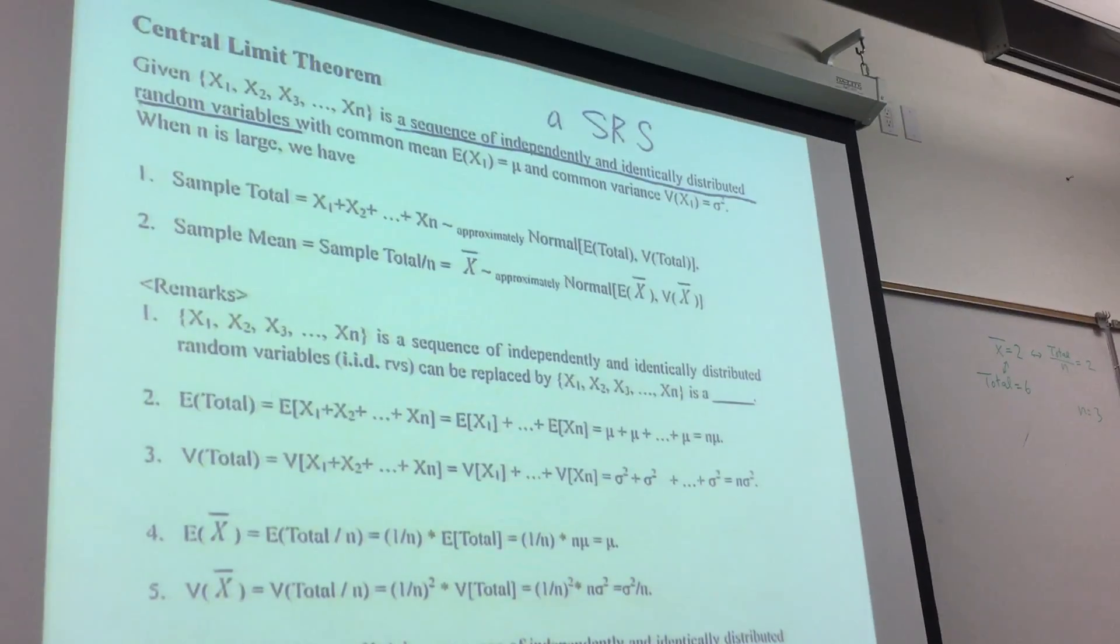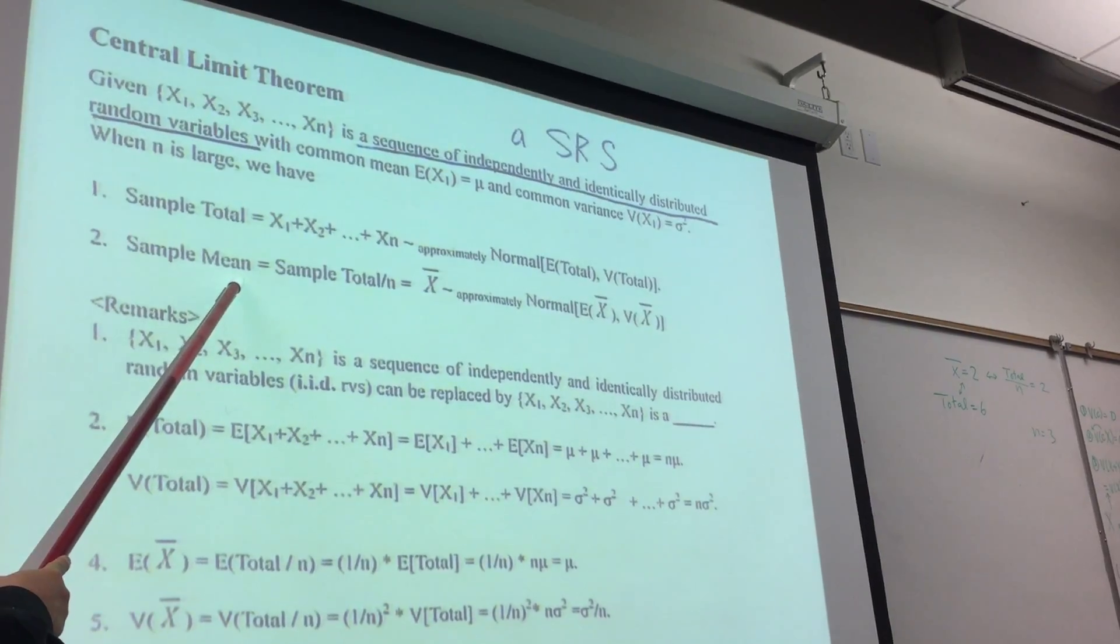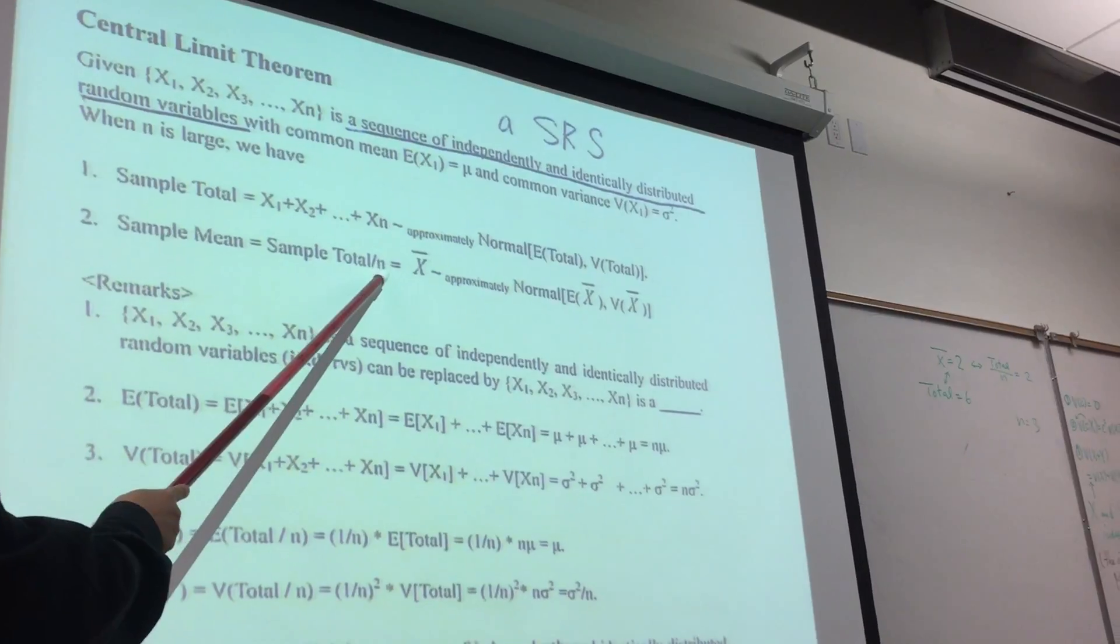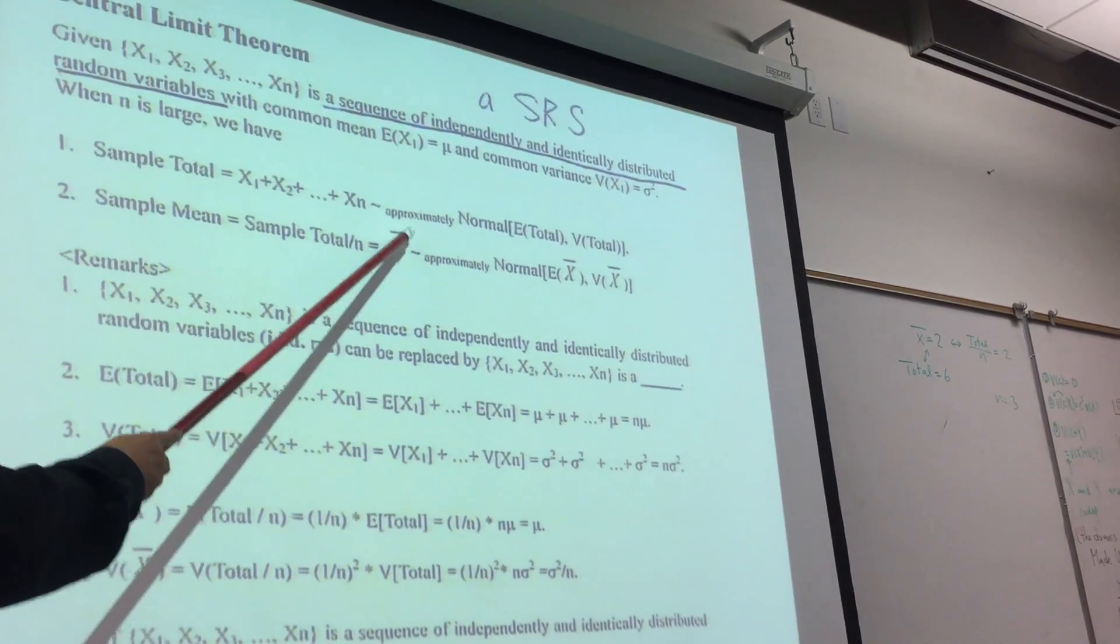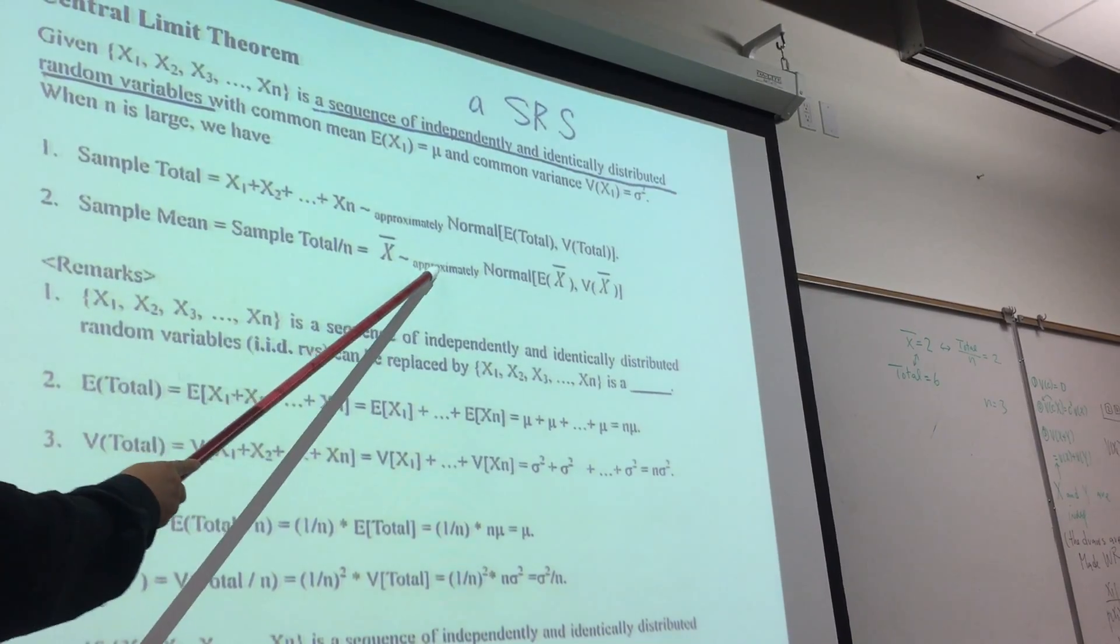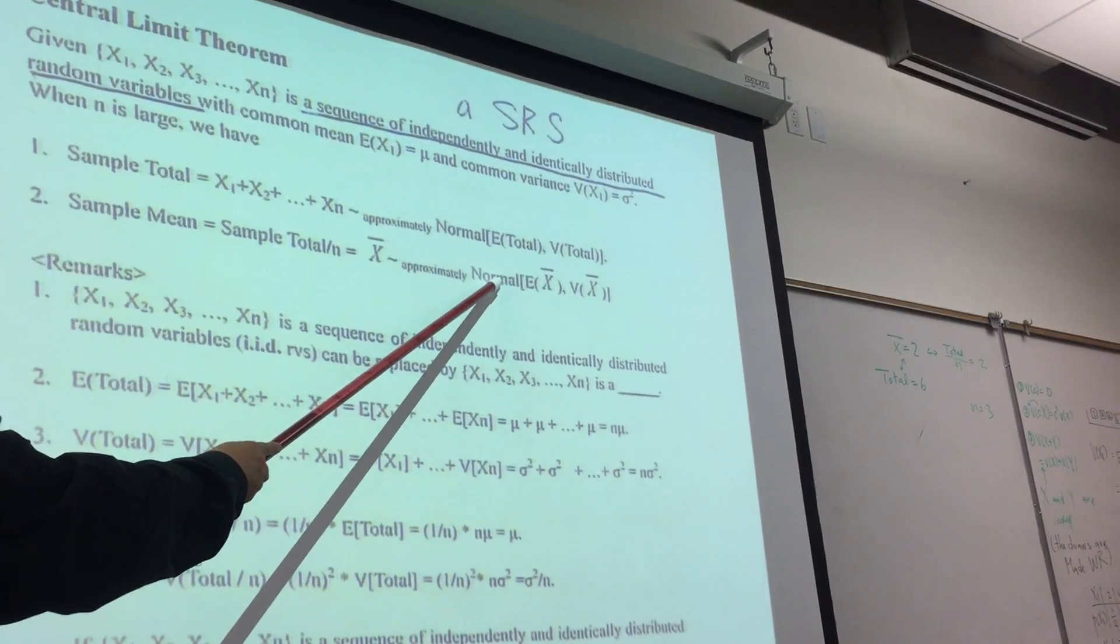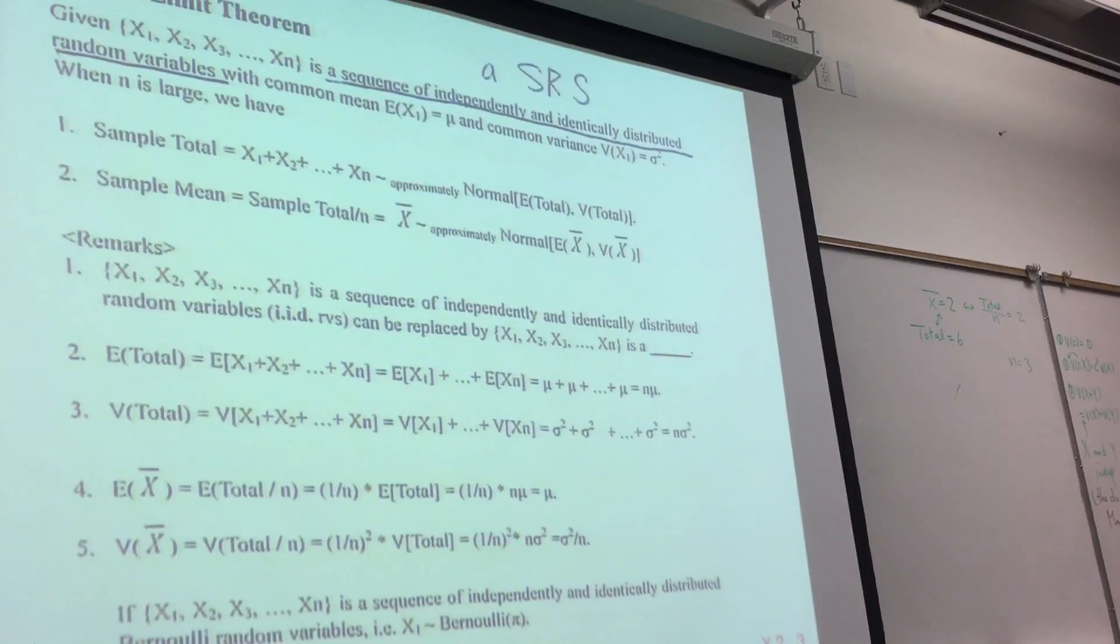Another version for the central limit theorem is expressed by sample mean. Sample mean is sample total divided by n. In our notation, use X̄. X̄, when sample size is large enough, follows approximately normal with mean of the sample mean and variance of the sample mean. This is the famous central limit theorem.